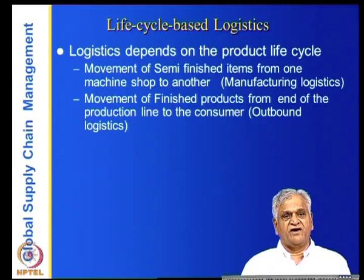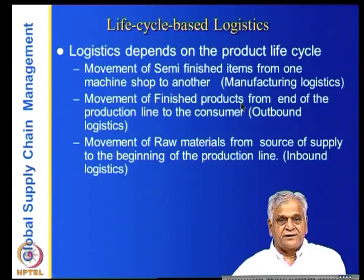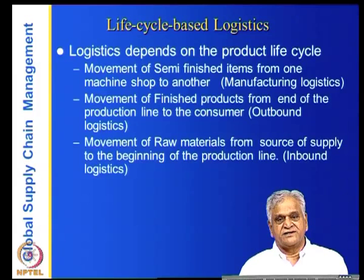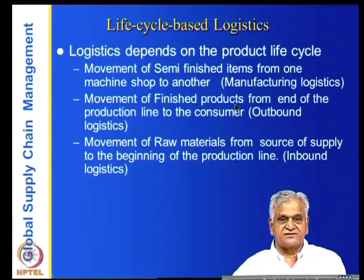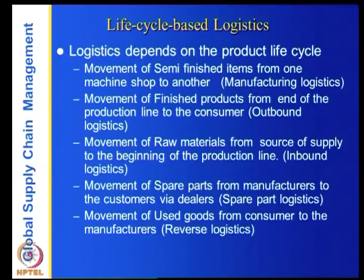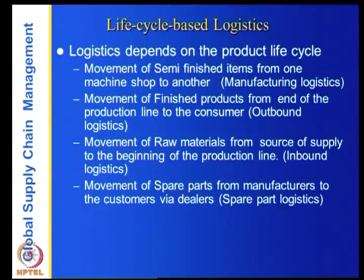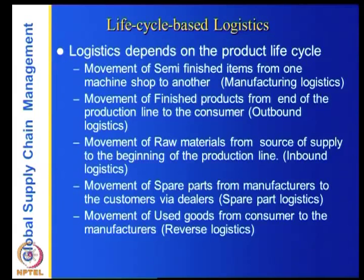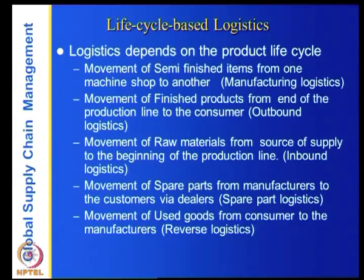Movement of raw materials from source of supply to the beginning of production — from suppliers to manufacturers — is called inbound logistics. Movement of spare parts from manufacturers to customers via dealers is also categorized as inbound logistics. Movement of used goods from consumer back to the manufacturer is called reverse logistics. Reverse logistics is important when items like plastic, steel, cell phones, or cars need to be reused after the consumer disposes of them. So logistics varies from manufacturing to inbound to outbound to spare parts to reverse logistics, each with its own peculiarities.